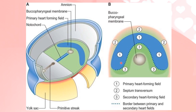The primary heart field develops due to the inductive influence of the underlying endoderm in the region of the splanchnic mesoderm. The secondary heart field is also formed and lies anterior to the foregut area. In this diagram, the buccopharyngeal membrane, the secondary heart field (this area), the primary heart field (blue area), and the septum transversum can all be appreciated.